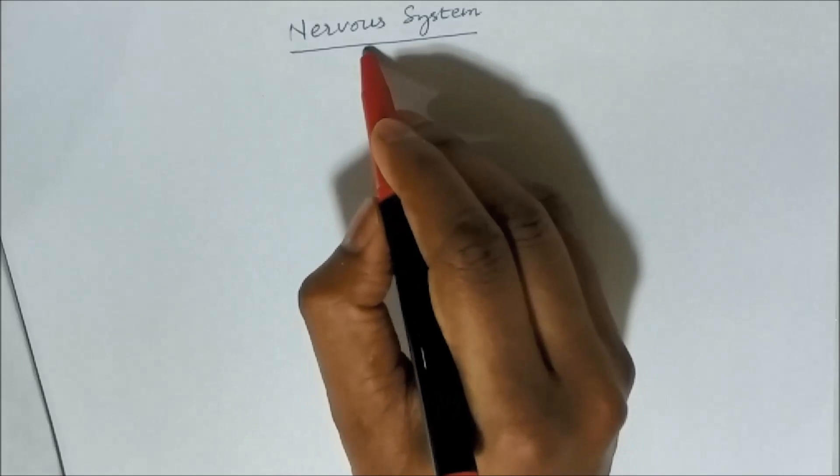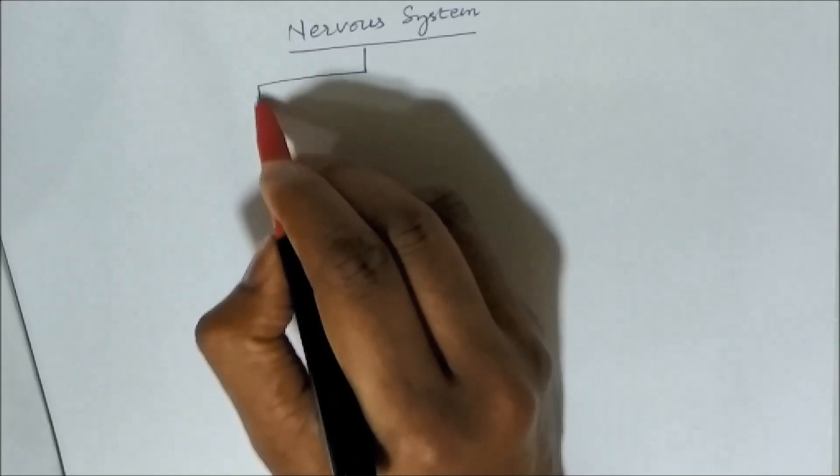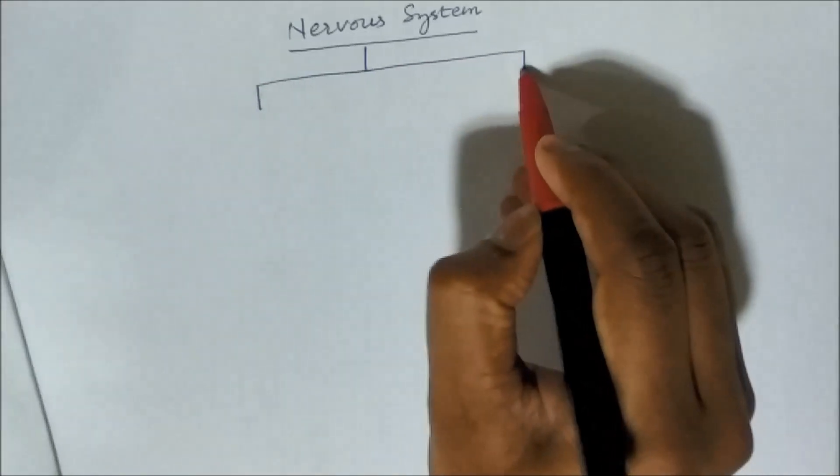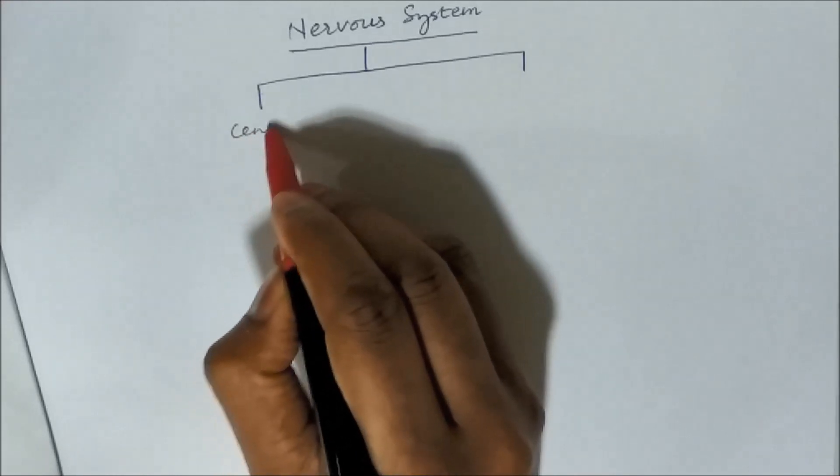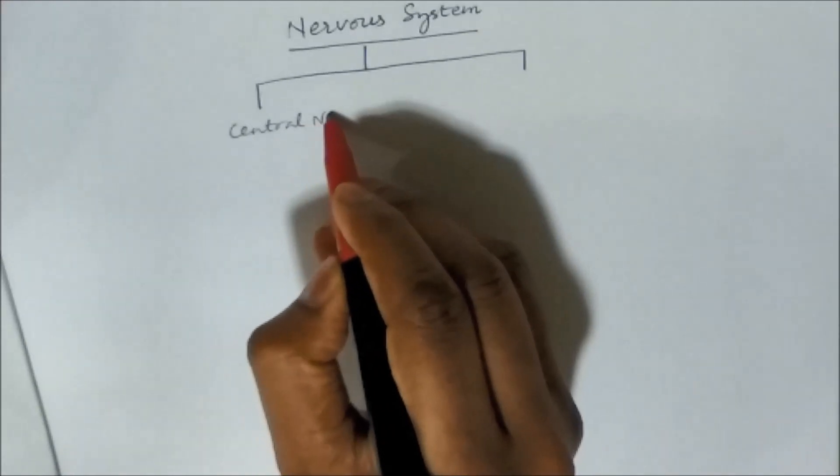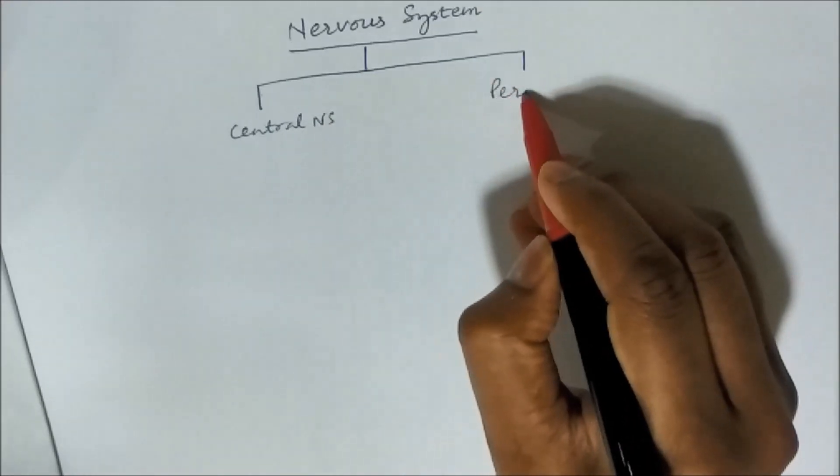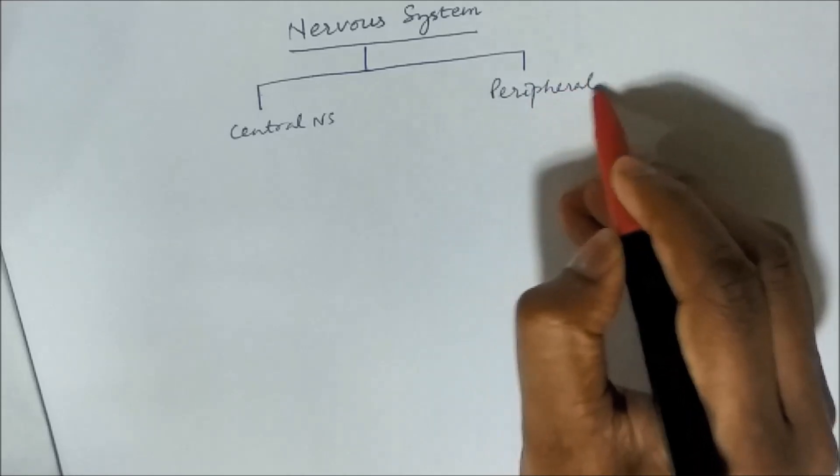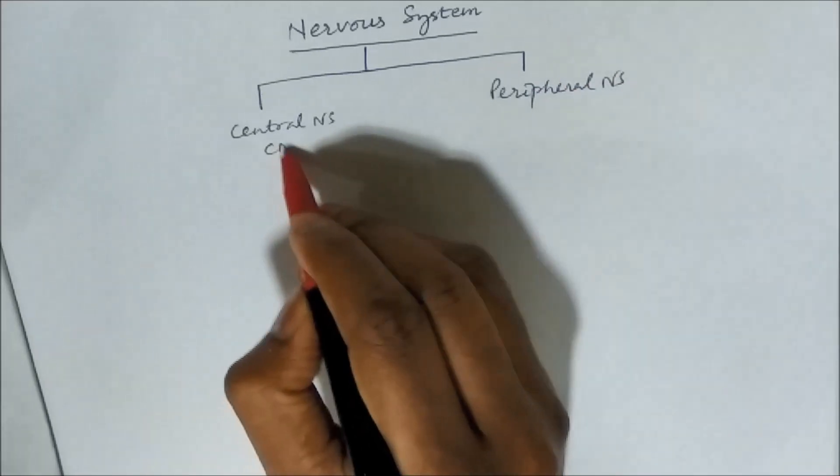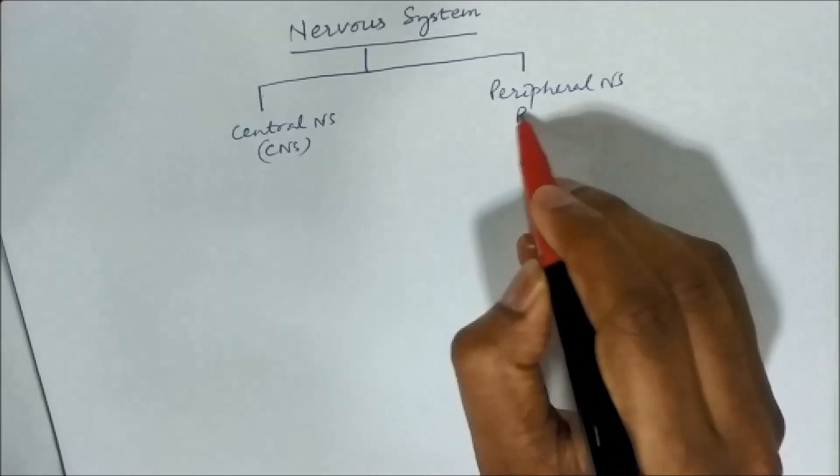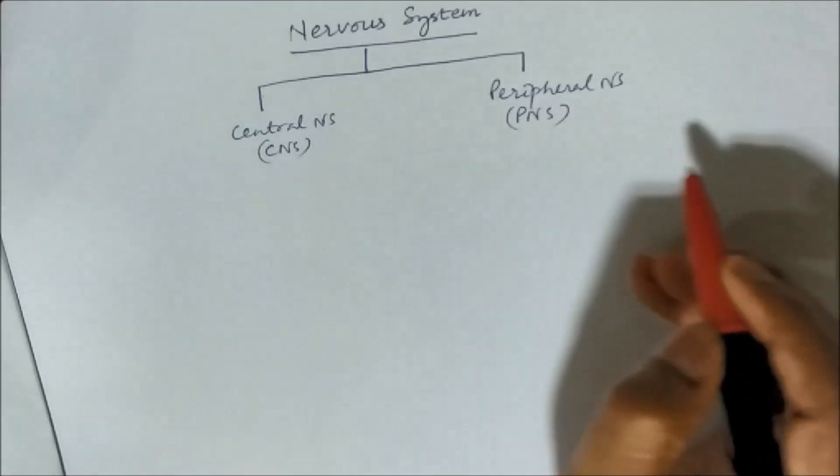So when we say Nervous System we can divide it into Central Nervous System and Peripheral Nervous System. Central Nervous System we call it CNS and Peripheral Nervous System we call it PNS.